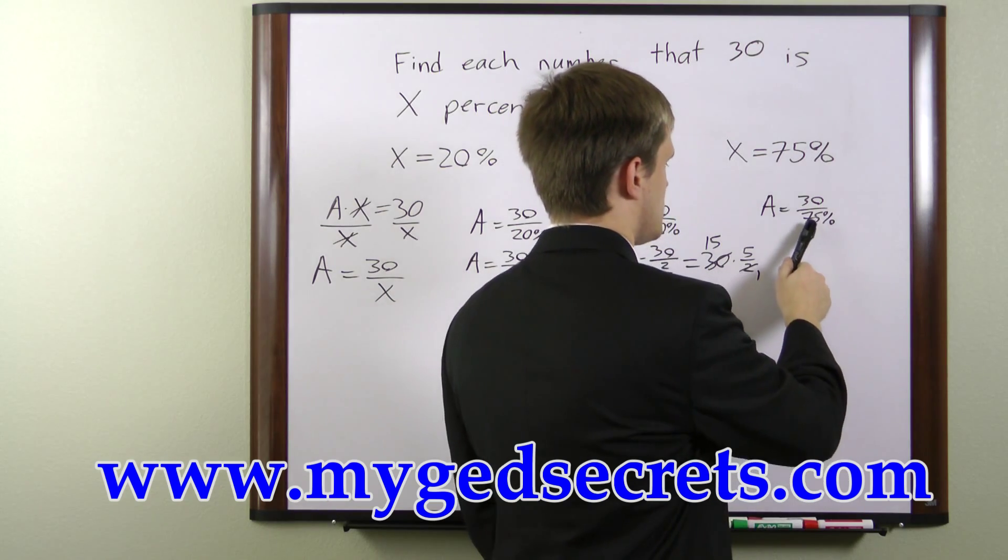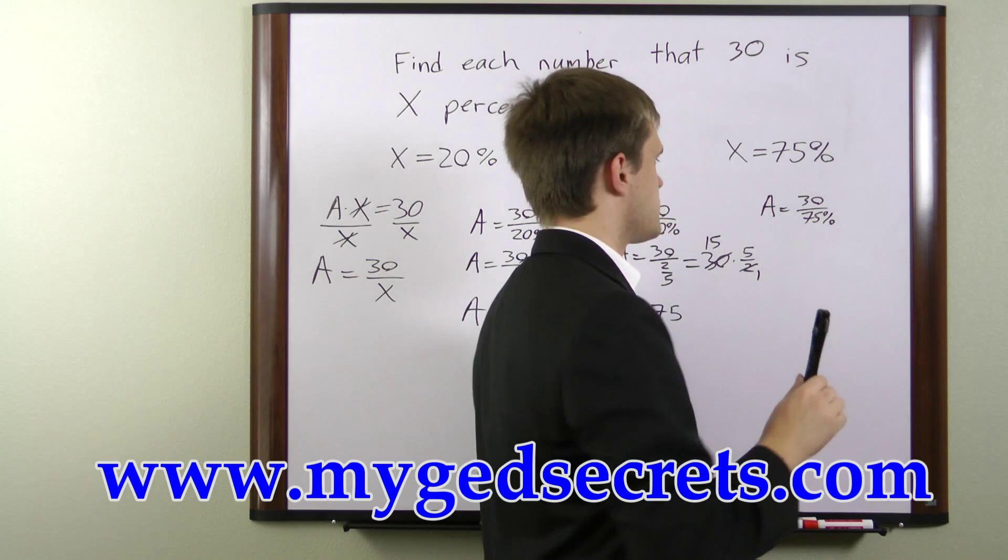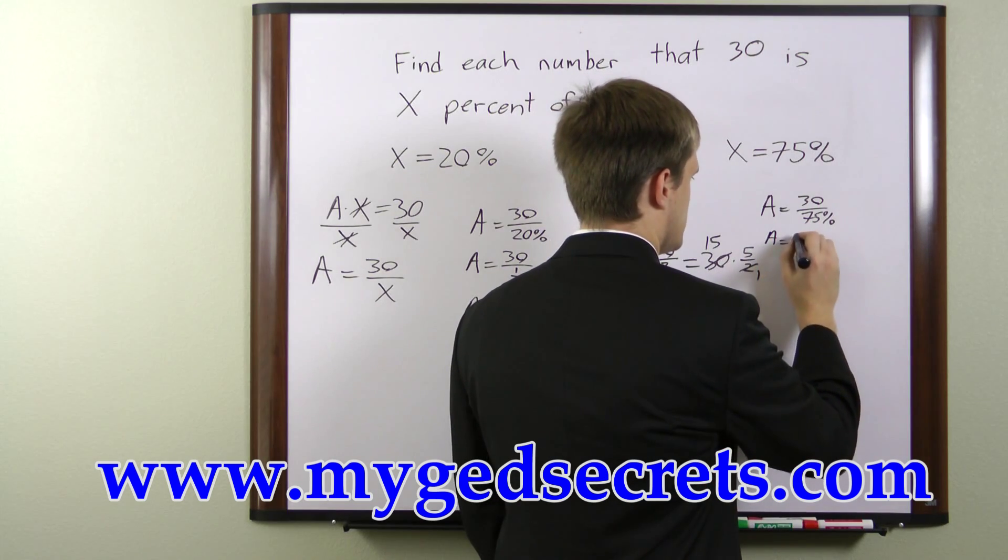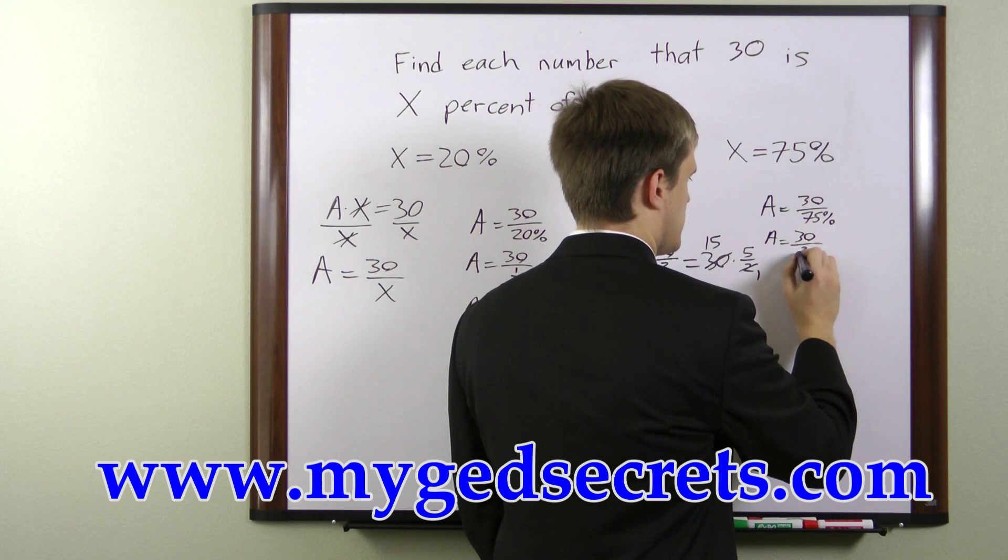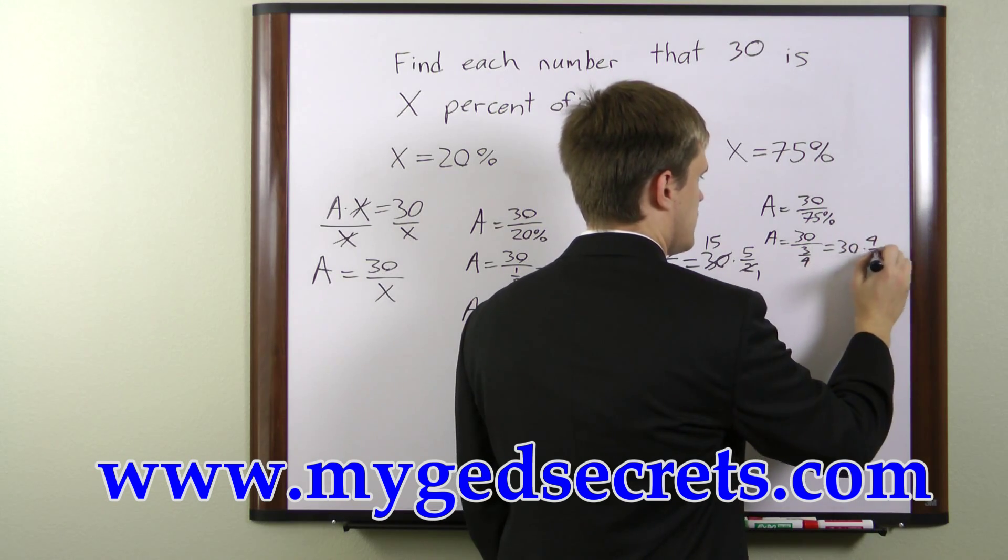The fractional equivalent of 75% is 3/4, so we can write that a equals 30 over 3/4, or 30 times 4 over 3.